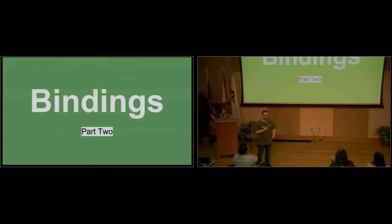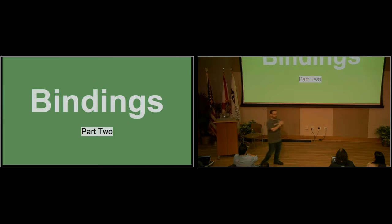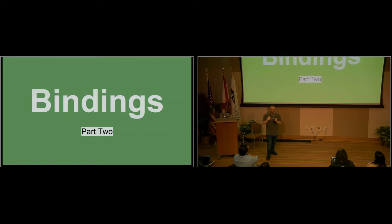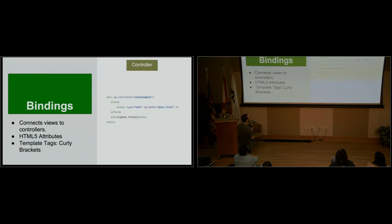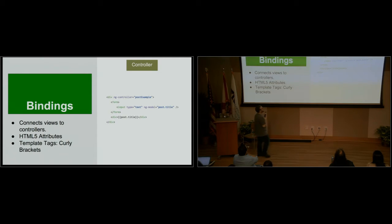So let's talk about bindings — how do we put this all together? We've got model, we've got view, we've got controller. The model is what the application currently has. The controller controls the model. The view displays the model. What brings them together? Bindings. Why do I like AngularJS? It's because I think HTML5 isn't broken — HTML5 is awesome. Data attributes in HTML5 are super slick.